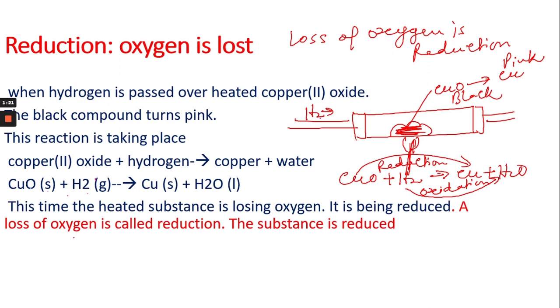So we can see copper(II) oxide when combined with hydrogen turns into copper and water. Copper(II) oxide is reduced into copper. It is reduced into copper. So a loss of oxygen is called reduction and the substance is reduced.